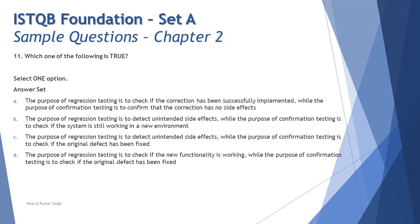Option D: the purpose of regression testing is to check if new functionality is working — this is wrong. Regression is a maintenance test repeated whenever there's a fix or change; new features are not in its scope. The second part — confirmation testing checks if the original defect has been resolved — is correct, but the first part is wrong. Partial reading can mislead you; read every single word carefully so you don't get confused.